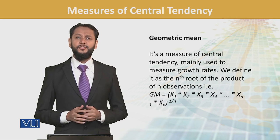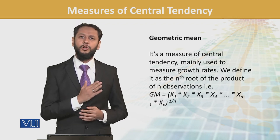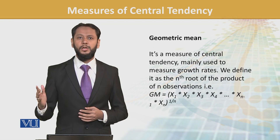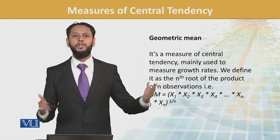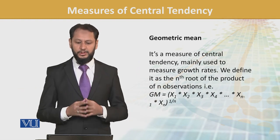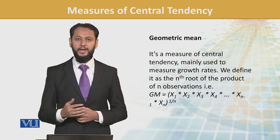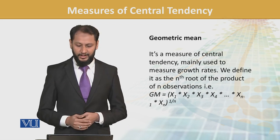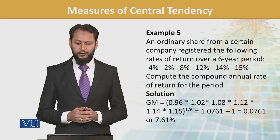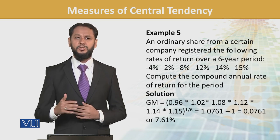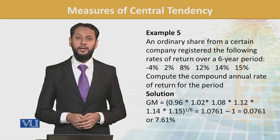Next is geometric mean. Geometric mean is specifically used when we are talking about periods for which data is related — such as growth rates. For example, an ordinary share from a certain company registered the following returns over 6 years. In the past year it will be minus 4 — a loss.